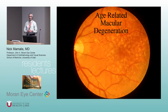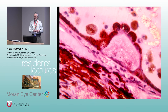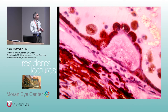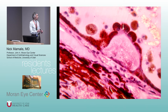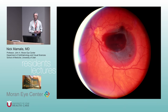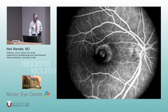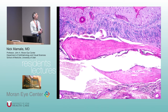Drusen are deposits beneath the RPE — technically intra-Bruch's membrane. You see these excrescences, and the overlying RPE is lost. Eventually you can get choroidal neovascularization with subretinal hemorrhage. Untreated, this leads to a disciform scar — a gliotic white scar beneath the retina.